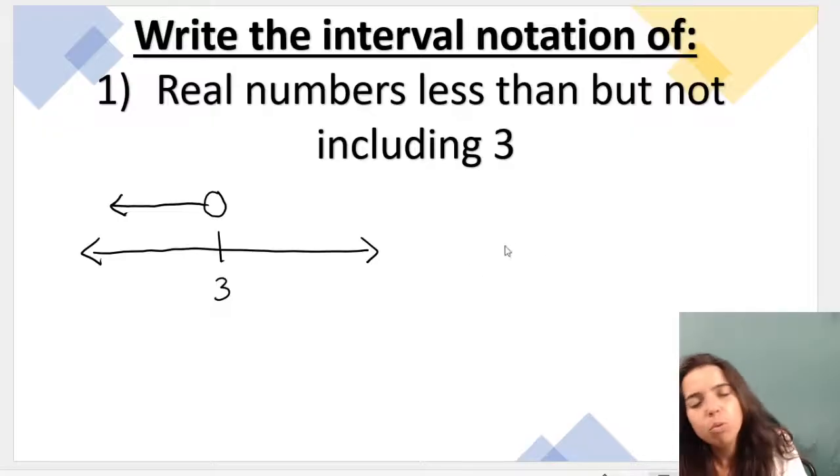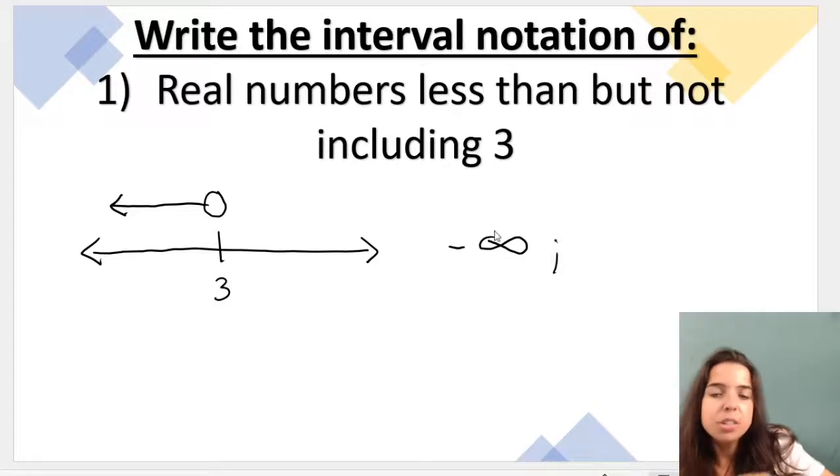So on which side in our brackets do you think that our 3 must go? Well, we're going less than 3. So that means our numbers stretch all the way to negative infinity. Because if I go less than 3, and I go all the way, that's going to go to negative infinity.